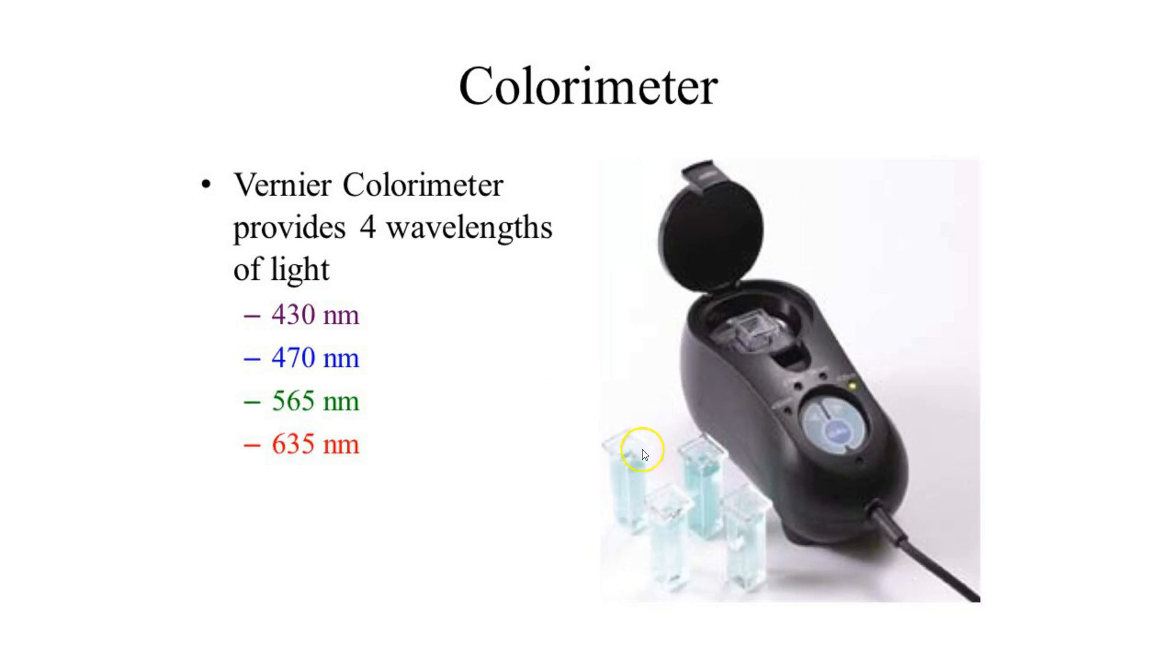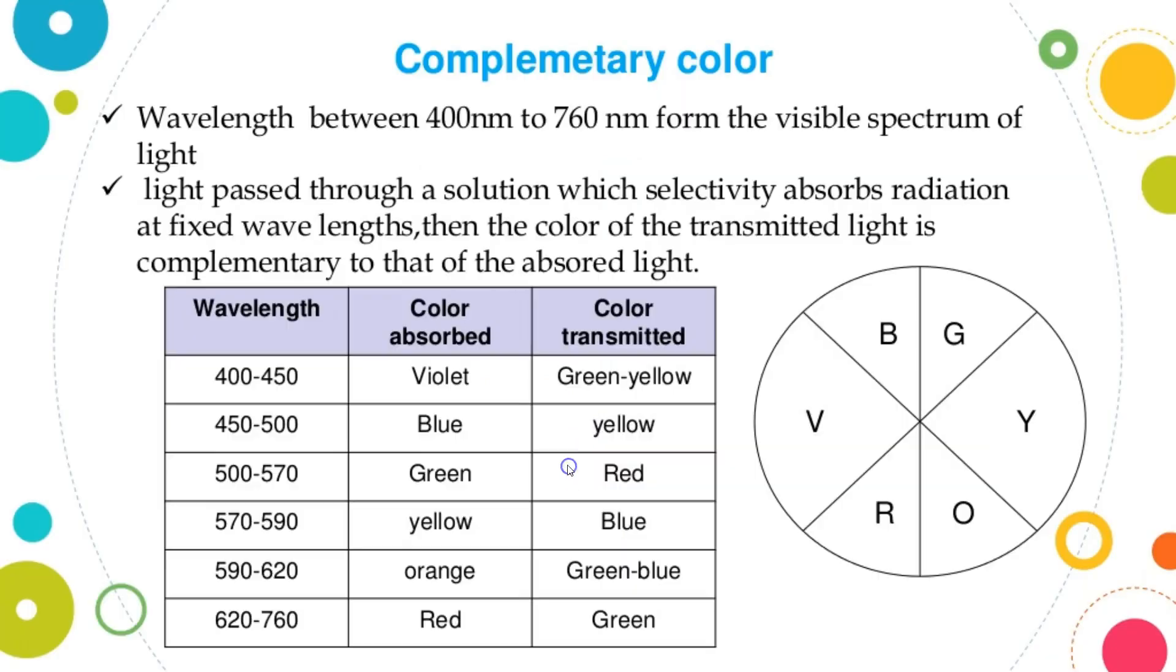Here's how this works. When you shine light through a solution that absorbs wavelengths between 400 to 450 nanometers, you end up seeing a greenish-yellow color. The color that's transmitted is the color that's not absorbed. When you have blue light shining through a solution, the solution absorbs the blue wavelengths, but the yellow passes through it.